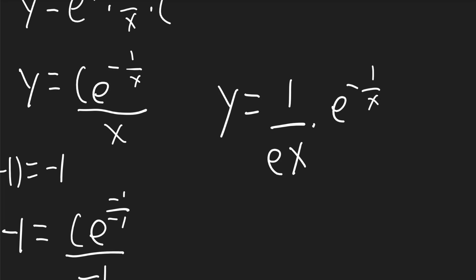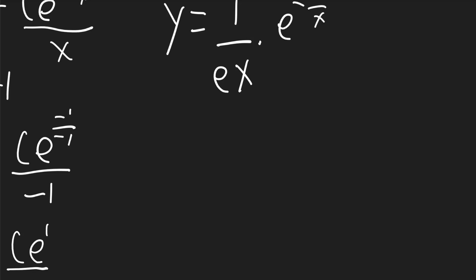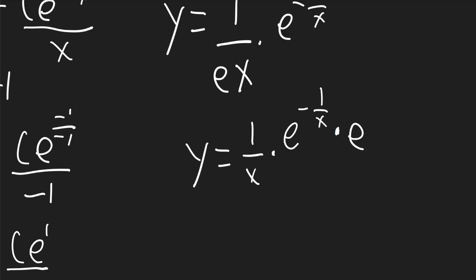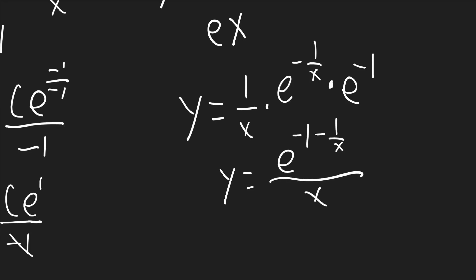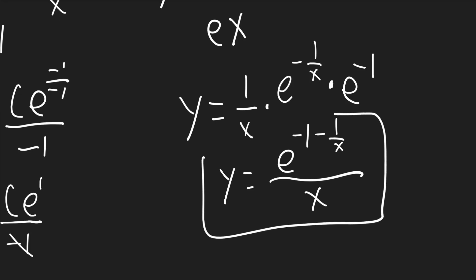So I'll just rewrite this. y will be equal to 1 over x times e to the negative 1 over x times e to the negative 1. So y will be equal to e to the negative 1 minus 1 over x over x. And that is your final answer.